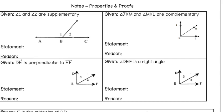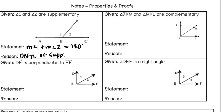Given that angle 1 and angle 2 are supplementary, the conclusion we can come to is that the measure of angle 1 plus the measure of angle 2 should equal 180 degrees. We know that because the definition of supplementary angles tells us that two angles that are supplementary must have a sum of 180. So we're using that definition of supplementary angles to make that statement.